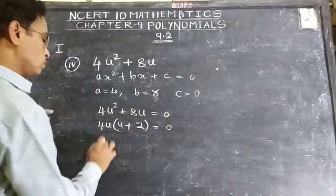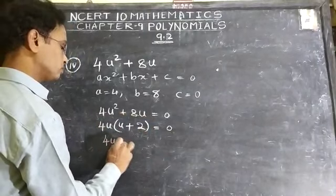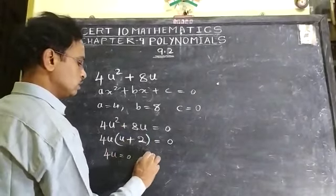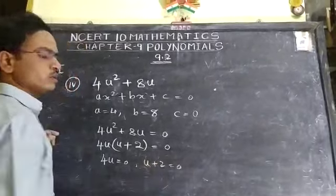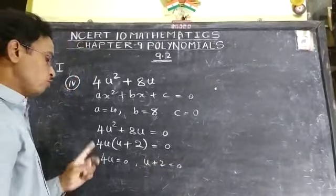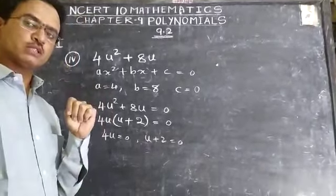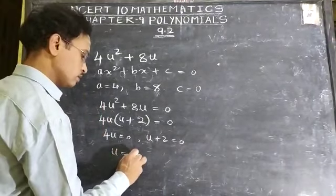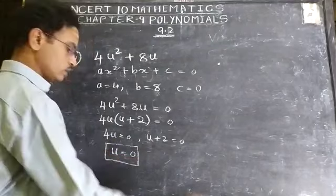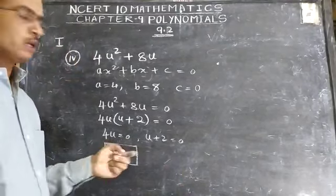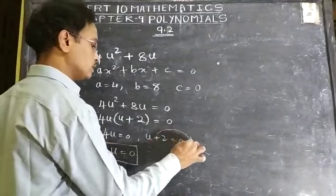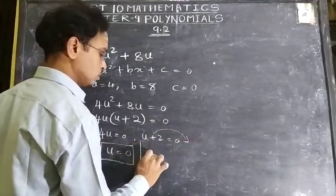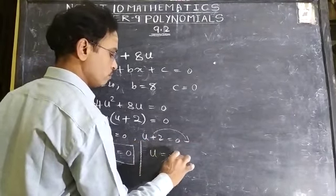4u = 0. Next, u + 2 = 0. Now 4u = 0 means u = 0. Now plus 2, you should take to the right-hand side. So u = 0 or u = -2.